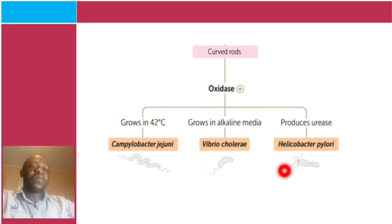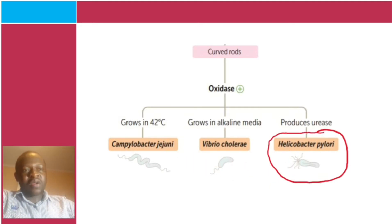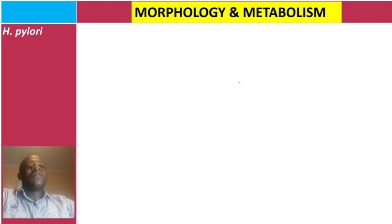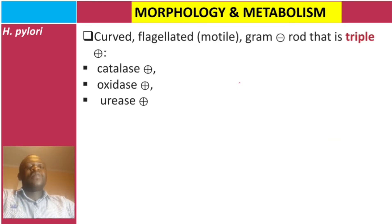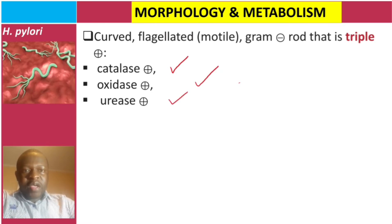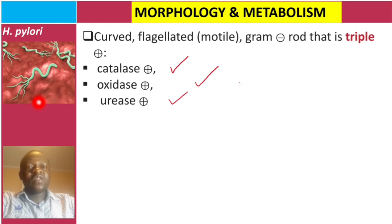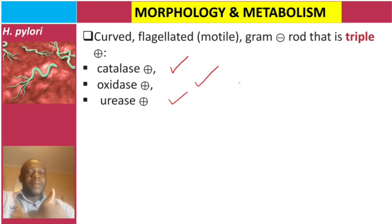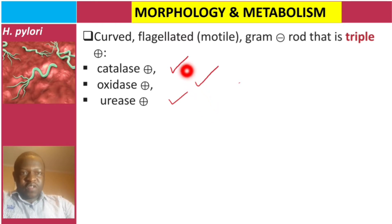Let's talk about Helicobacter pylori, starting with morphology and metabolism. This bacteria is curved and flagellated, which makes it motile. The flagella are located on a single pole in a tuft arrangement — you can see four flagella here. It is gram-negative, and it is known to have a triple positive profile: catalase positive, oxidase positive, and urease positive.